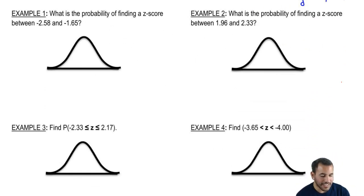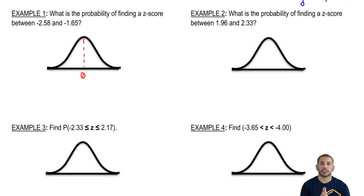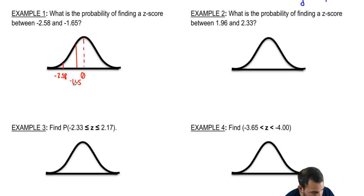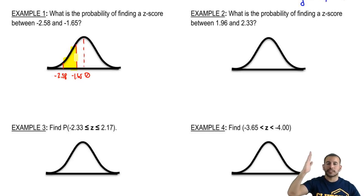So what's the probability of finding a z-score between negative 2.58 and negative 1.65? Let's start off by drawing our midpoint — I always do that so I know that's my reference point, that's the middle. It's a force of habit and it's really good for further problems. Then we have negative 2.58 and negative 1.65, with zero to the right. So we're looking for that shaded area from negative 2.58 to negative 1.65. Let's look up both of those probabilities.